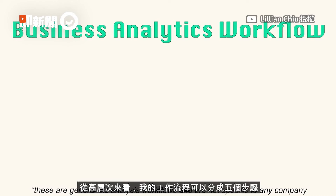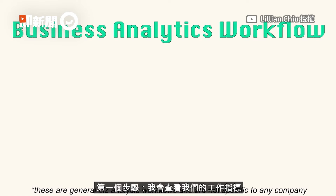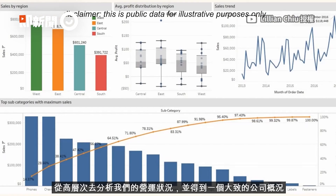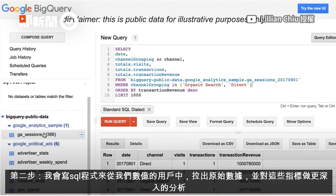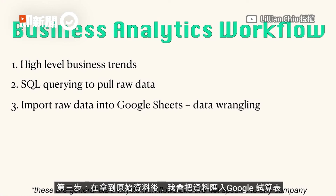On a high level, my business analytics workflow can be broken down into five steps. Step one: I look at our business metrics and see on a high level whether we're doing well or not, to get a general feel of where we are. Step two: I then go deeper into analyzing these metrics by writing SQL queries to pull the raw data from hundreds of millions of user data points.